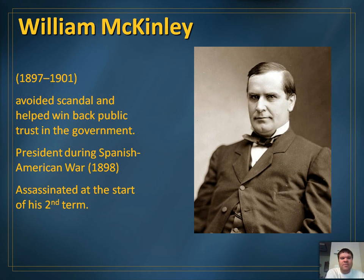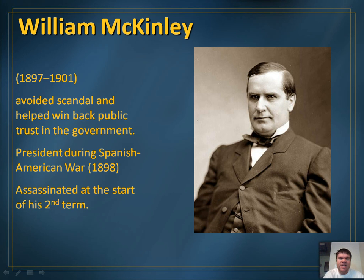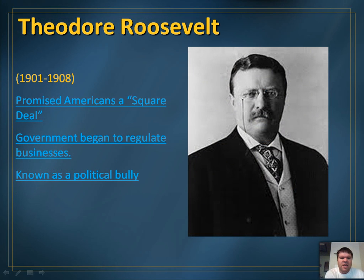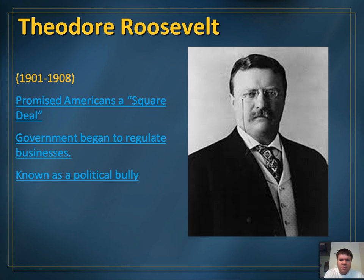In 1897 a new president, William McKinley, avoided scandal and helped win back public trust in government. He was president during the Spanish-American War in 1898, and during the first part of his second term, he was assassinated at the New York World's Fair in 1901 — our third assassinated president. His vice president, Theodore Roosevelt, then became president. Roosevelt promised Americans a square deal — to be fair and honest — and began making the government regulate businesses, becoming known as a trust-busting president. He's also one of the presidents sculpted on Mount Rushmore.